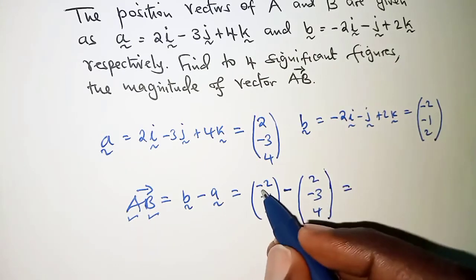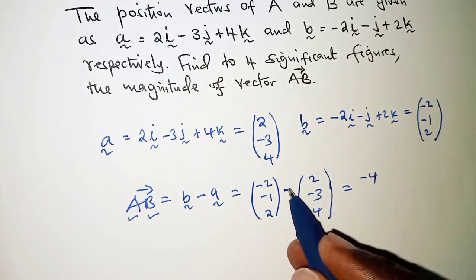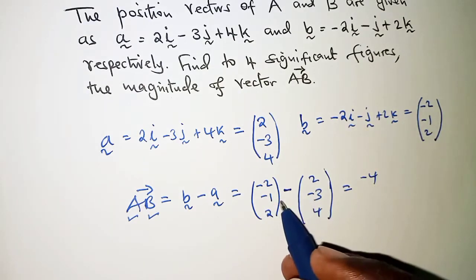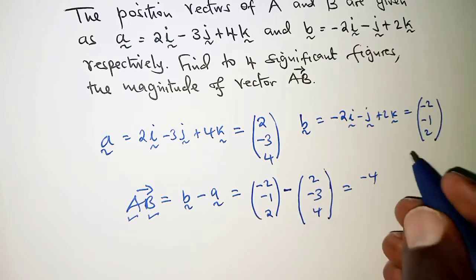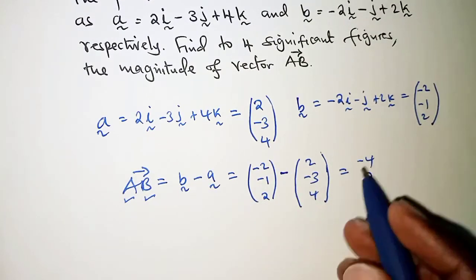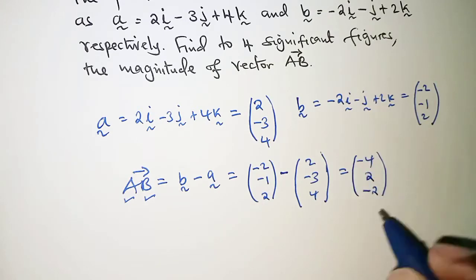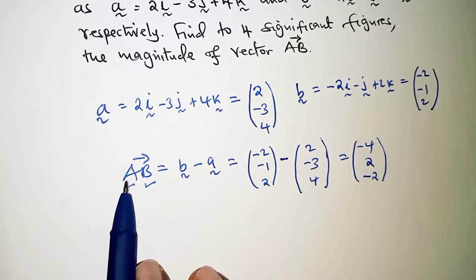This gives us -2 - 2 = -4, -1 - (-3) = -1 + 3 = 2, and 2 - 4 = -2. So AB = (-4, 2, -2).